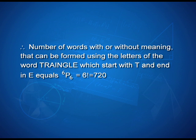Let us extend this: suppose T and E can be interchanged, then how many total words can be formed? T and E can be permutated in 2P2 = 2! ways. So by the fundamental principle of counting, the total number of words becomes 720 × 2 = 1440. More conditions coming in means more thought must be put into dealing with the problem.